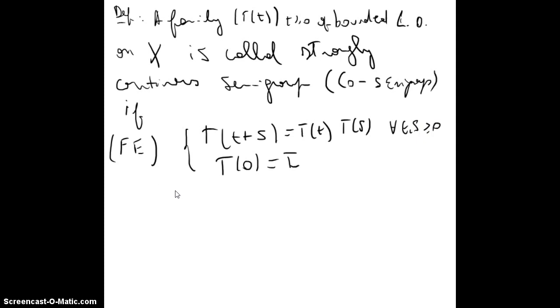But the difference would be that now the map t to T(t)x has to be continuous from R+ into X, and this is for every little x in big X Banach space.